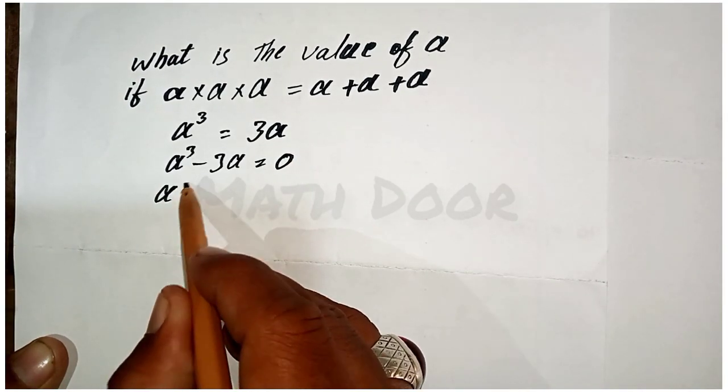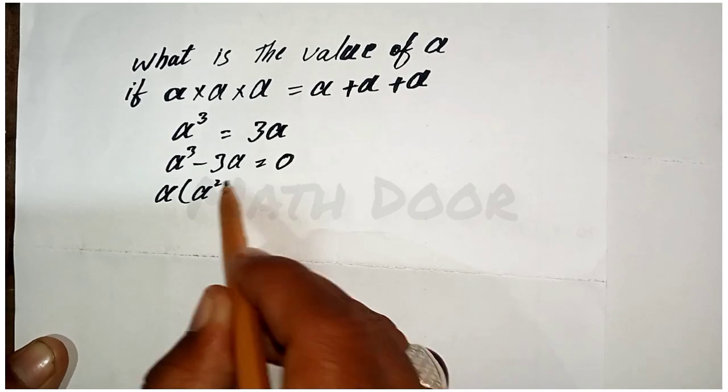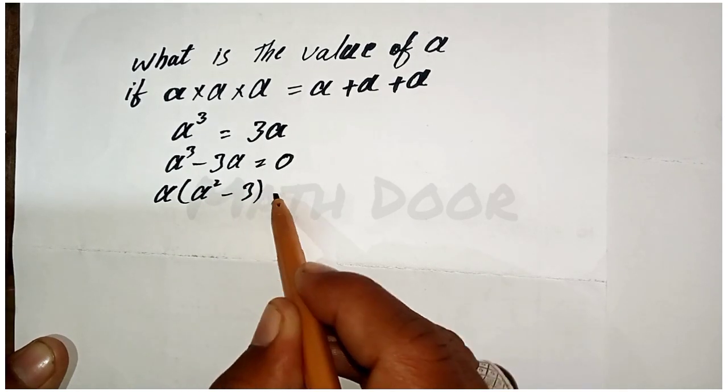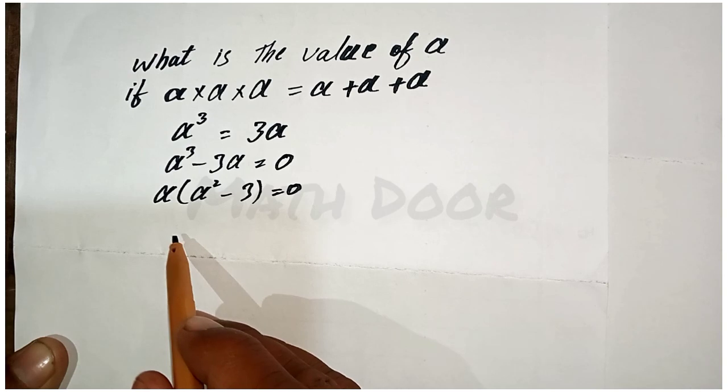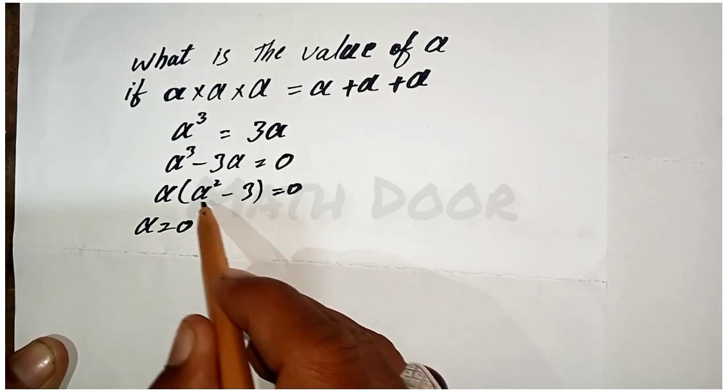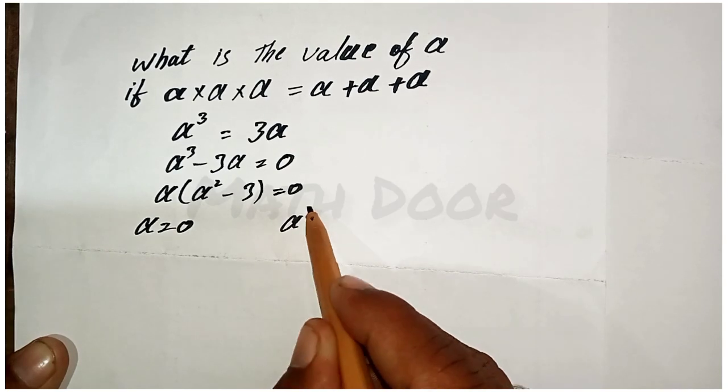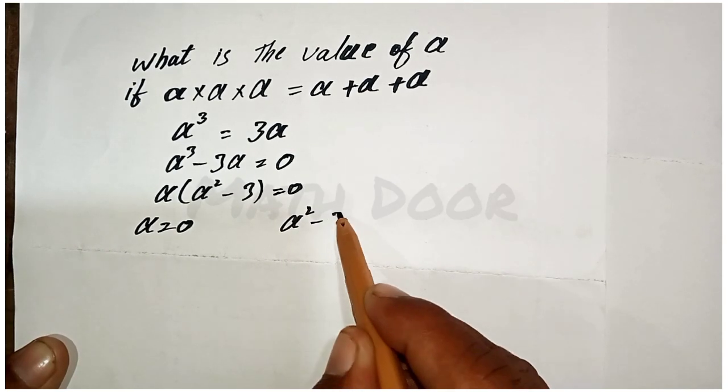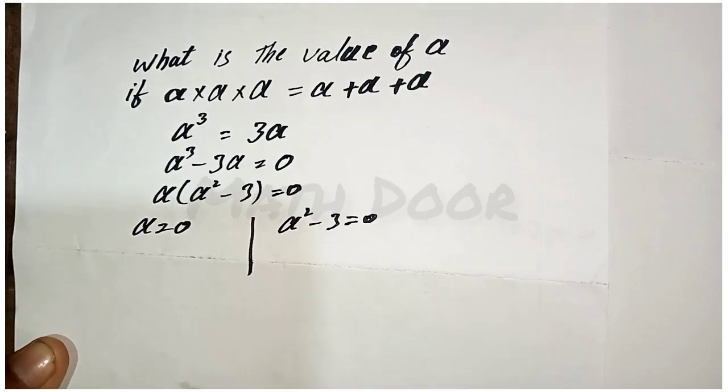We take a as a common factor. We get a(a² - 3) = 0. Now we have two factors: one factor is a = 0, another factor is a² - 3 = 0.